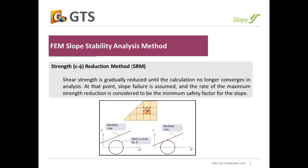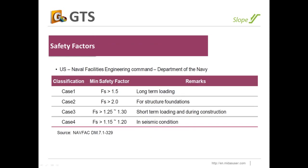With the finite element SRM method, we start with a strength line and reduce it through trial and error until reaching the failure point — a small circle — and calculate the safety factor from that. Once we have safety factors, we compare them to what the design code requires. Different situations require different safety factors; the examples shown here are from the US code.